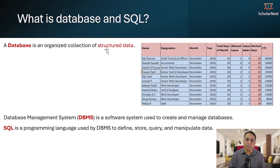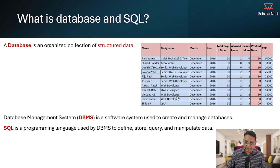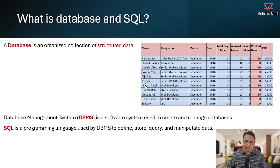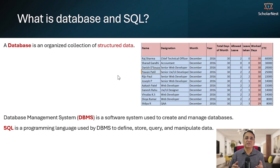In simple words, a structured data can be represented in a tabular form. Here is an example — you can see data about some people: their designation, month and year of joining, total days of month, allowed leave — some employee data for a company. It can be represented as rows and columns. The first row represents one employee's information, the second row represents another employee, and each column represents one attribute about the employee, for example name, designation, month, year, and so on. This is what we call structured data: data which can be represented in a table-like structure arranged in rows and columns.